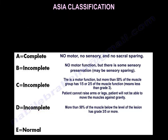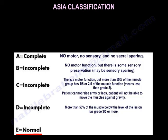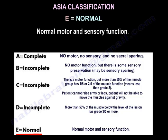ASIA E — E is strong like an elephant. E is normal: normal motor and sensory function.